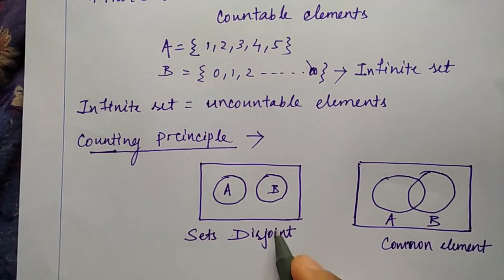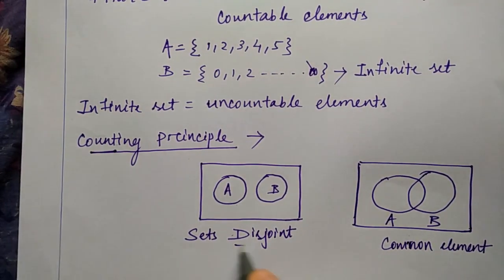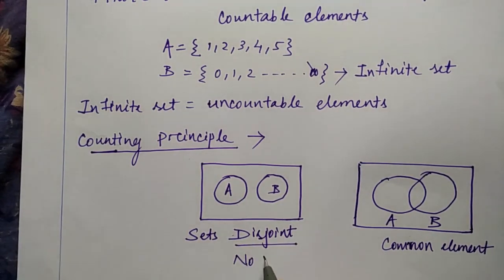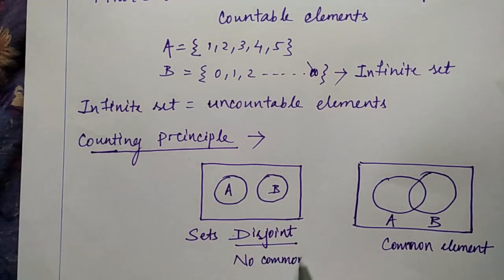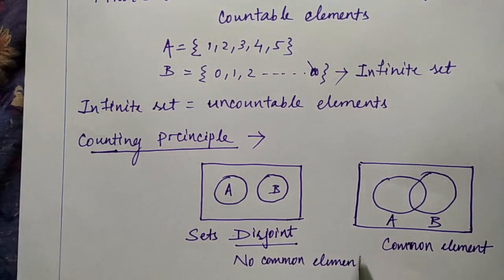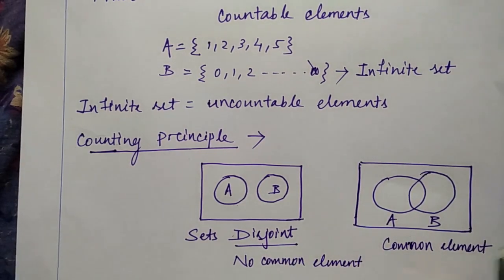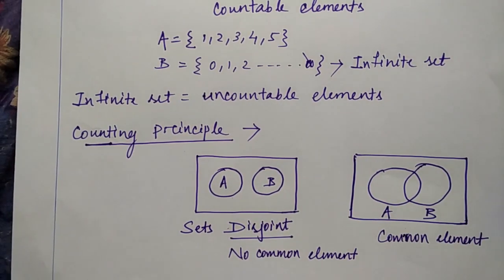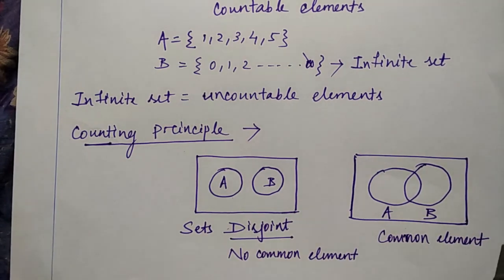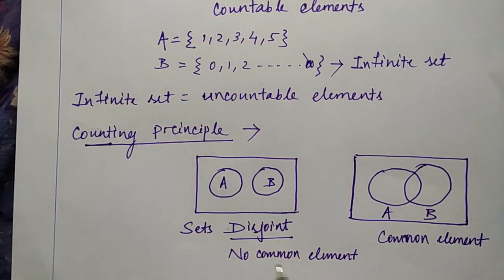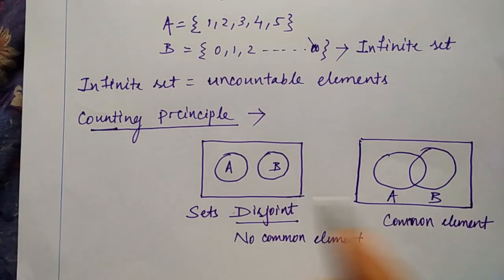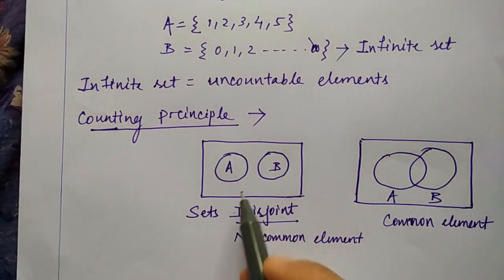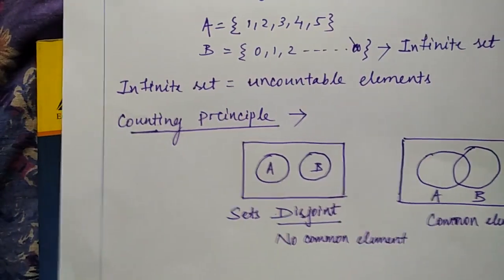Disjoint means there are no common elements between the sets. The second case — you can say these sets are joint or non-disjoint; there is no particular name for it. So it has some common elements, whereas the first (disjoint) case has no common elements.